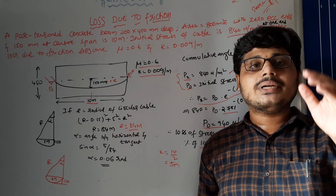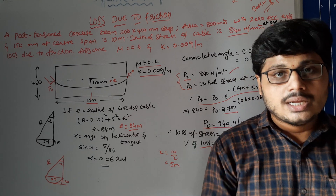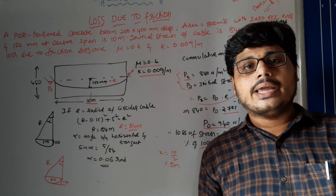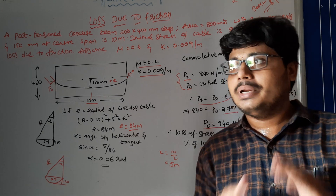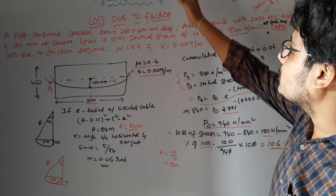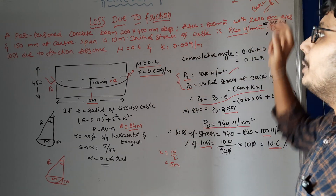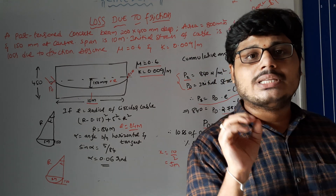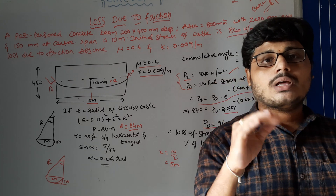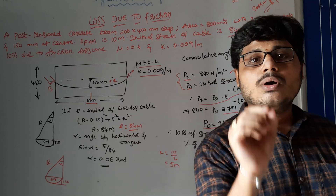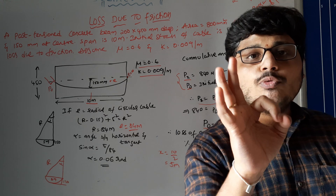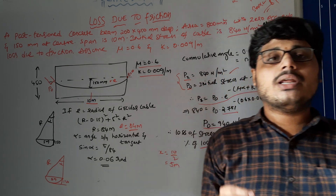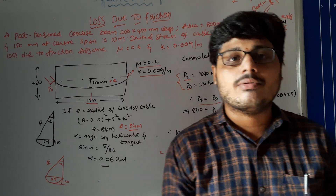If they ask only for pre-stressed losses, calculate only pre-stress losses. If they ask for post-tension losses, calculate only post-tension losses. If they ask for both, calculate both using a tabular column with post-tension and pre-tension columns. We will now discuss a 14-marks problem with a neat example — please follow the video carefully, as this is a very important problem. You can secure 14 marks.